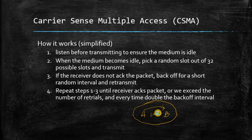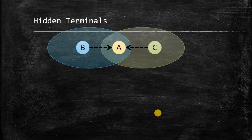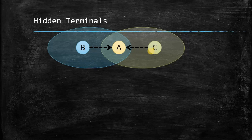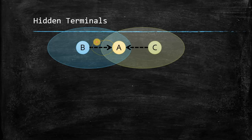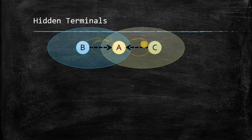Now, what problems can occur because of this? The first problem is the hidden terminal problem. In the diagram, A and B are in the range of each other, and A and C are in the transmission range of each other, but B and C are not connected — C is outside the transmission range of B. If B wants to send data to A, it checks the medium and, finding it idle, sends data to A. At the same time, if C also wants to send data, it checks its own medium, finds it idle, and also sends data at the same time. So A is receiving data from both B and C simultaneously, causing a collision.